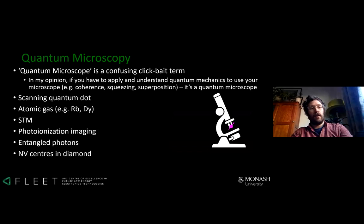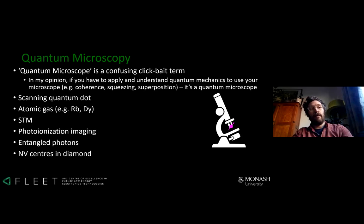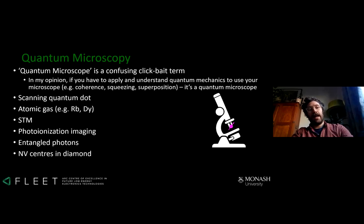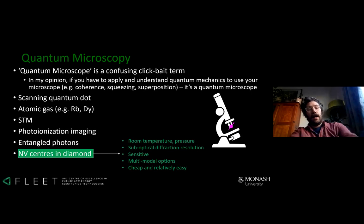Quantum microscopy is a confusing clickbait term that doesn't really mean anything — I've decided to stop using it. Basically, anything that uses quantum mechanics to understand how to use your microscope is a quantum microscope, so it's not a very specific term. That includes things like scanning quantum dots, using an atomic gas like a BEC or a warm vapor cell, scanning tunneling microscopes, photo-ionization imaging, or even using a conventional microscope with entangled photons like NOON states.